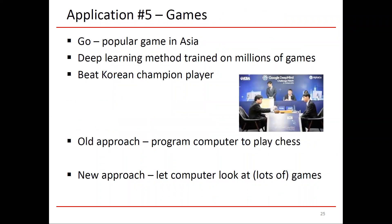The next application is games. When I was a kid, I remember a supercomputer beating the world's chess champion for the first time. A more recent example: Go is a popular game in Asia, and a few years ago, deep learning methods were used to train on millions of games and beat the best Korean champion. The old approach for chess was writing a very complicated program thinking ahead about all possible moves. The new approach lets the computer look at millions of games — requiring massive computation and storage, but it's more flexible and requires much less programming than having chess experts build a specific algorithm.